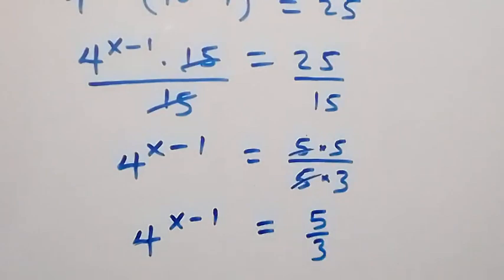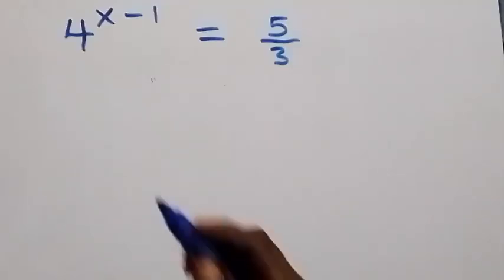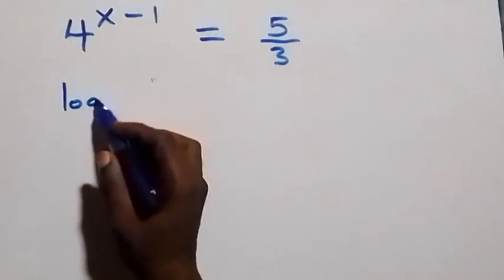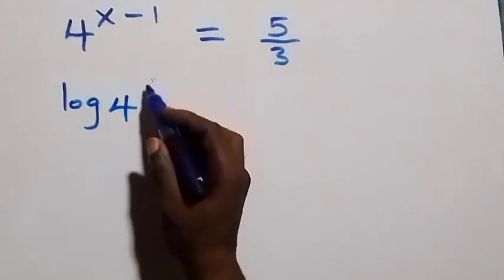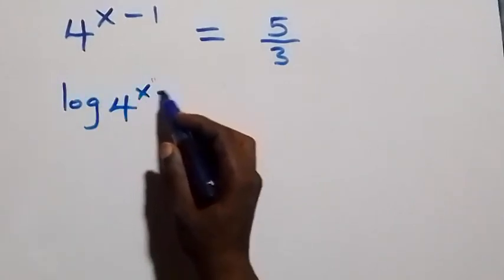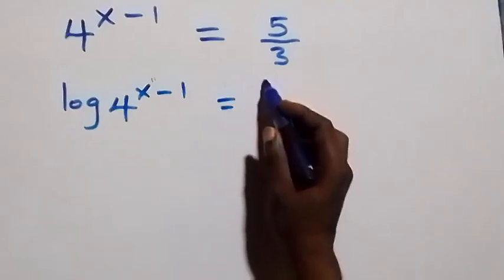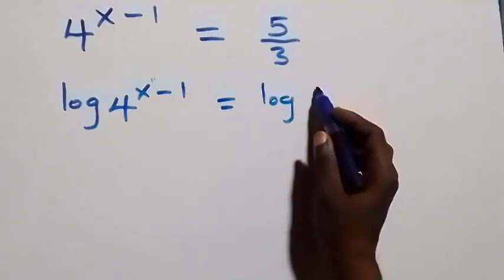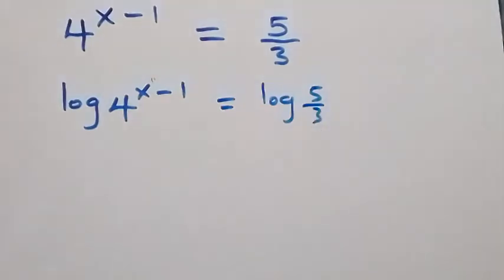Solving further, we take the log on both sides, giving us log of four raised to power x minus one equals to log of 5 over 3.